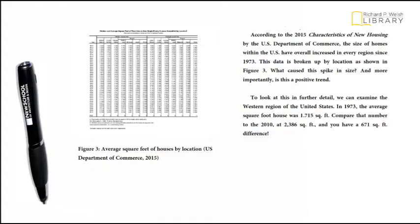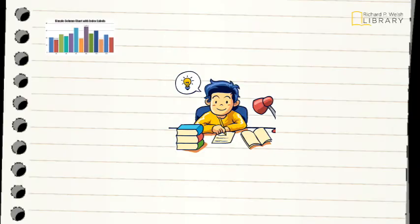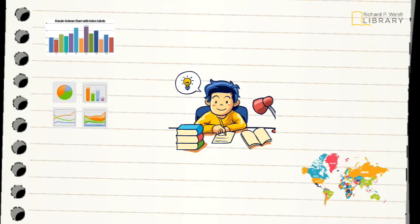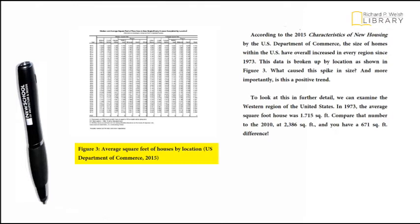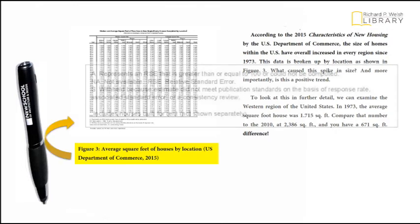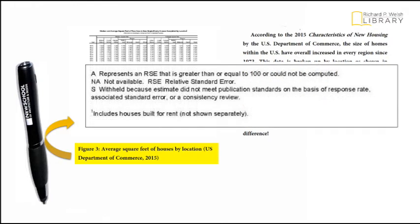This student included a table found in a government source. Tables are considered figures and follow all of the same rules. That means graphs, charts, maps, drawings, tables, plans, renders, and photographs should all be included in your list of references. Notice that all of the original information is included in the table. This includes the legend or explanation of any symbols used in the table or graph. Any graphic you include should be easily understood with the information given.